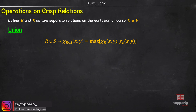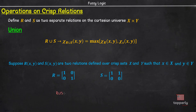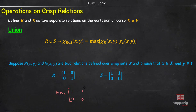As an example, consider the relations R and S defined in the universe X cross Y. Then R union S is given by maximum of 1 and 1 which is 1, maximum of 0 and 1 which is 1, maximum of 0 and 0 which is 0, and maximum of 1 and 0 which is 1. So, this matrix is R union S.